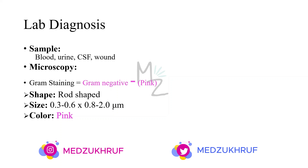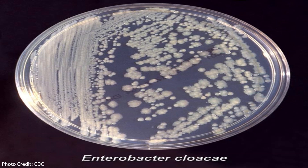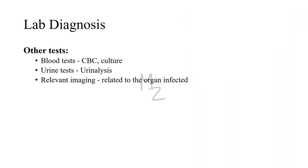Lab diagnosis requires samples of blood, urine, CSF, and wound swabs. On gram staining the bacterium appears gram negative — pink colored and rod shaped, 0.3–0.6 by 0.8–2 micrometers. Colonies are formed on blood agar and are smooth or rough in appearance, and are lactose fermenting. Media used include EMB agar, MacConkey agar, blood agar, and tryptic soy broth. Other tests include CBC, blood culture, urinalysis, and relevant imaging such as CT, X-ray, or MRI.